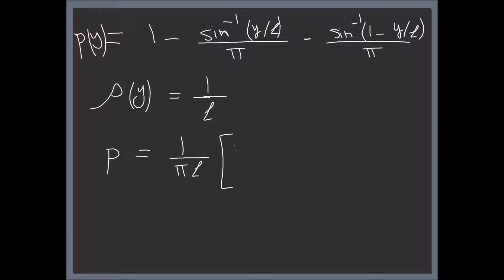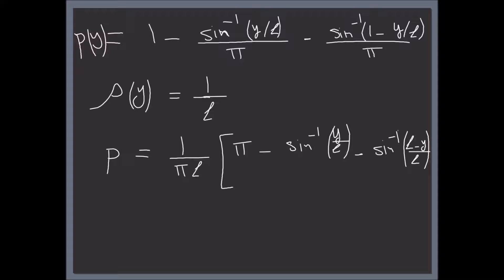The probability of crossing equals one divided by (π·L) times the integral from 0 to L of: π minus arcsin(Y/L) minus arcsin((L − Y)/L) dY. This integral from 0 to L is the full probability expression.